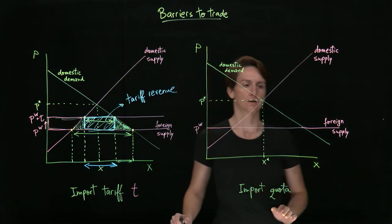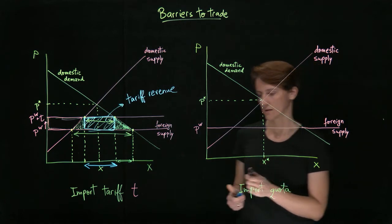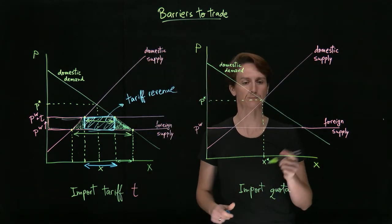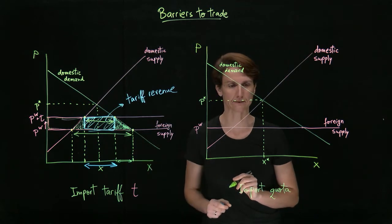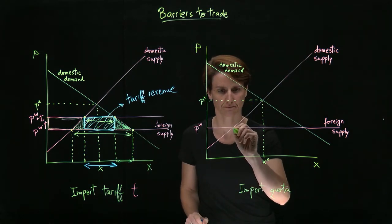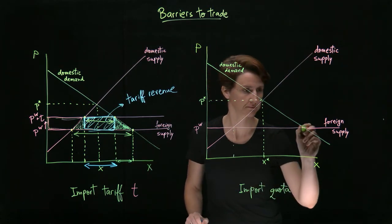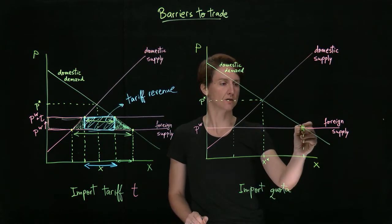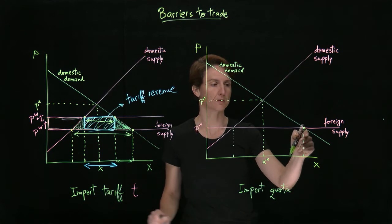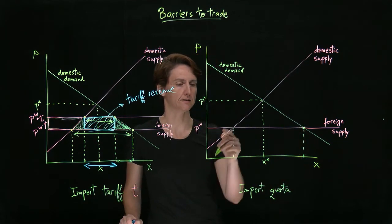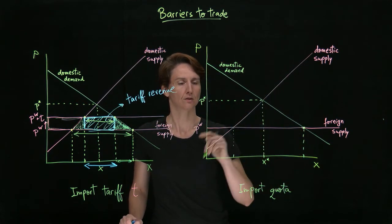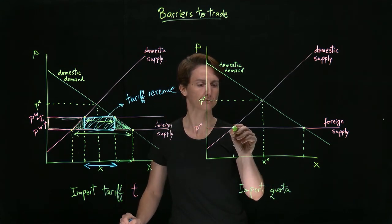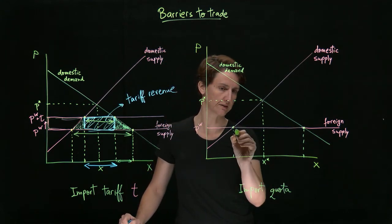Import quotas work very similarly to tariffs. Again, the initial picture is the same as we were drawing here. So we have a quantity consumed by domestic consumers and the quantity produced by domestic firms, and the difference between them was a quantity of imports.